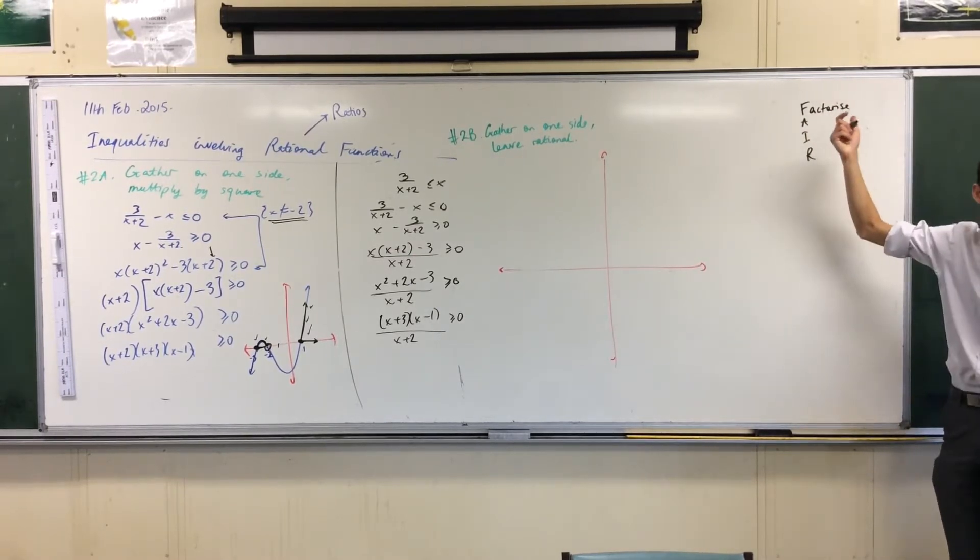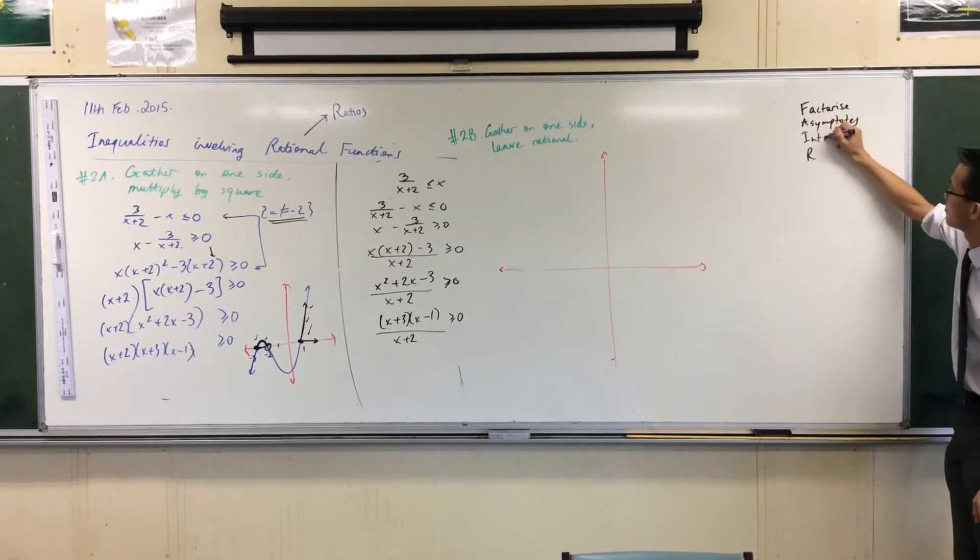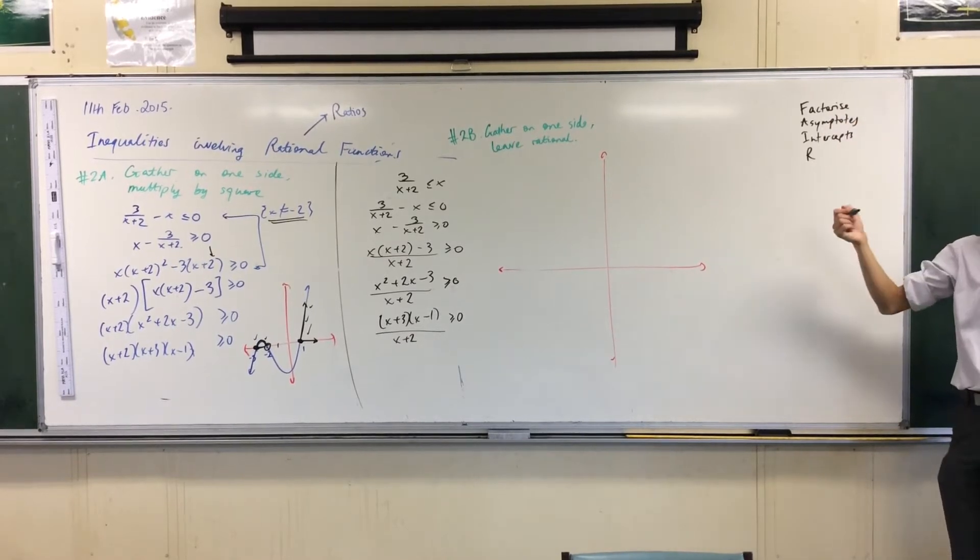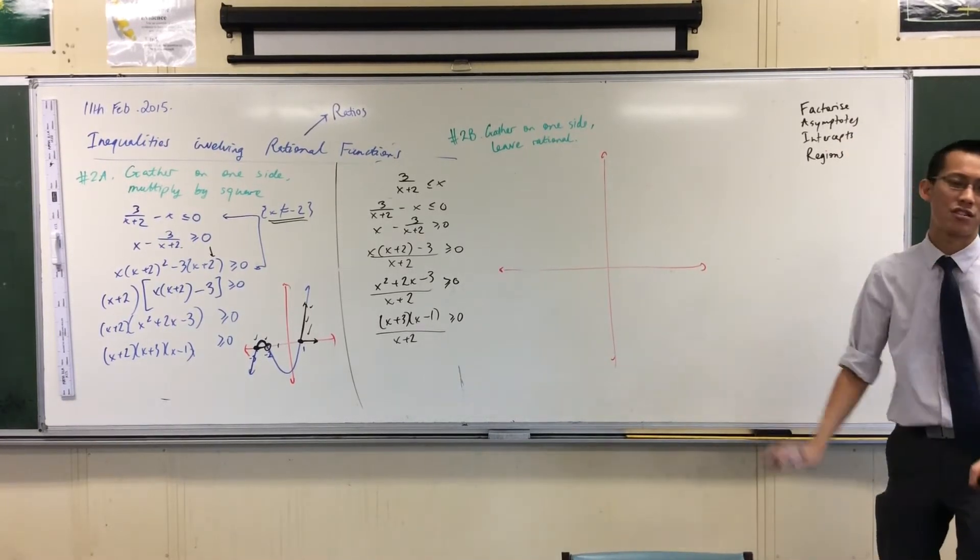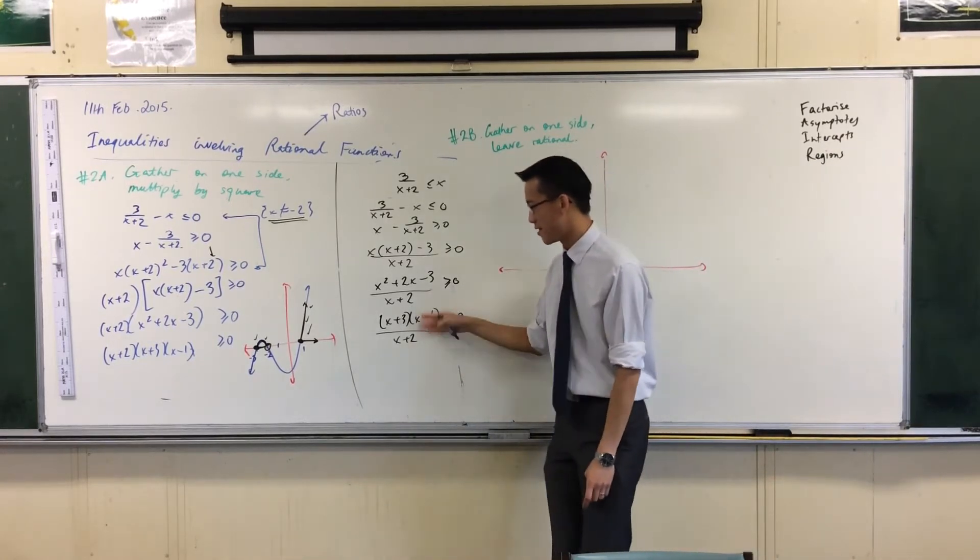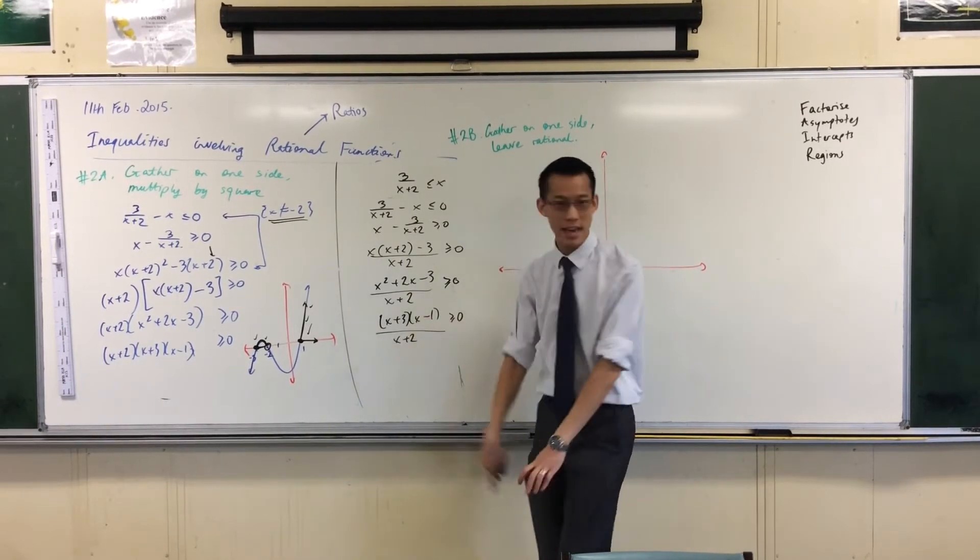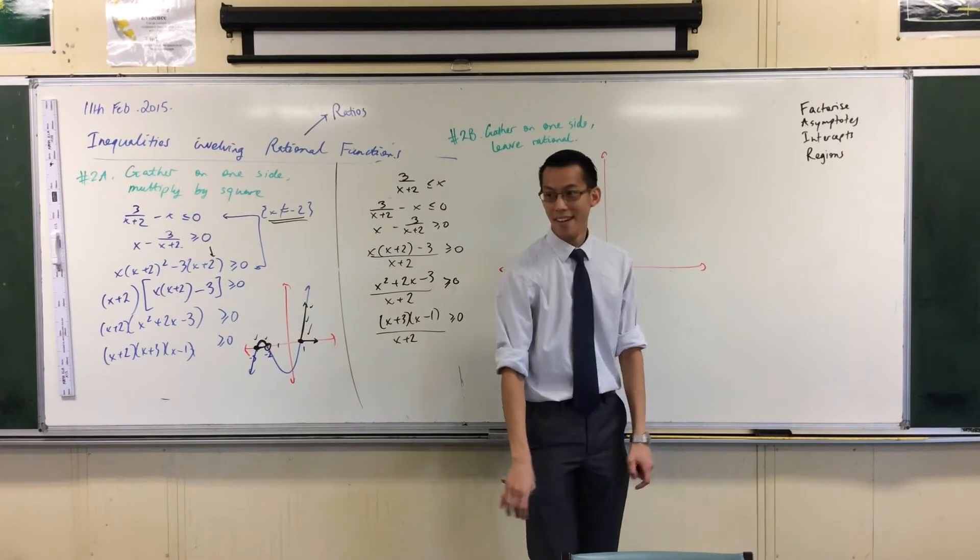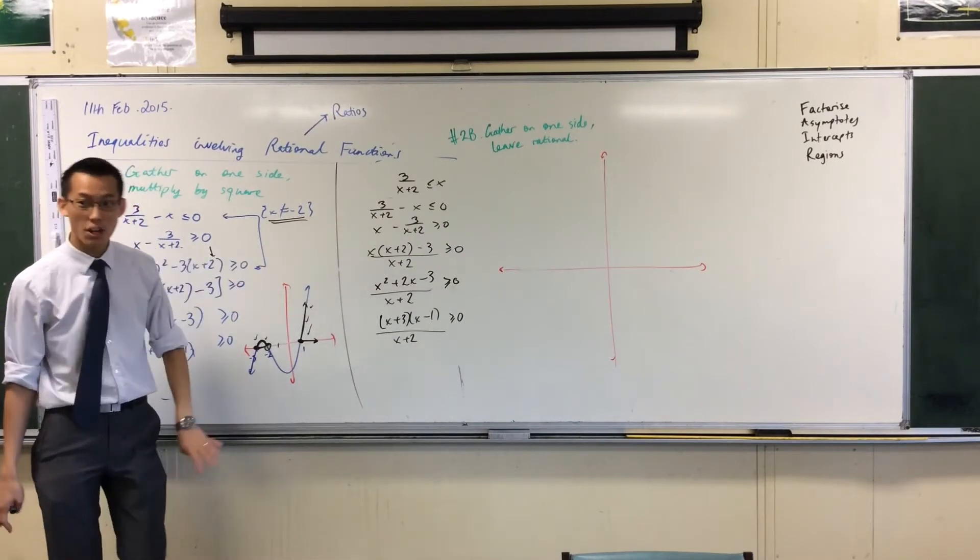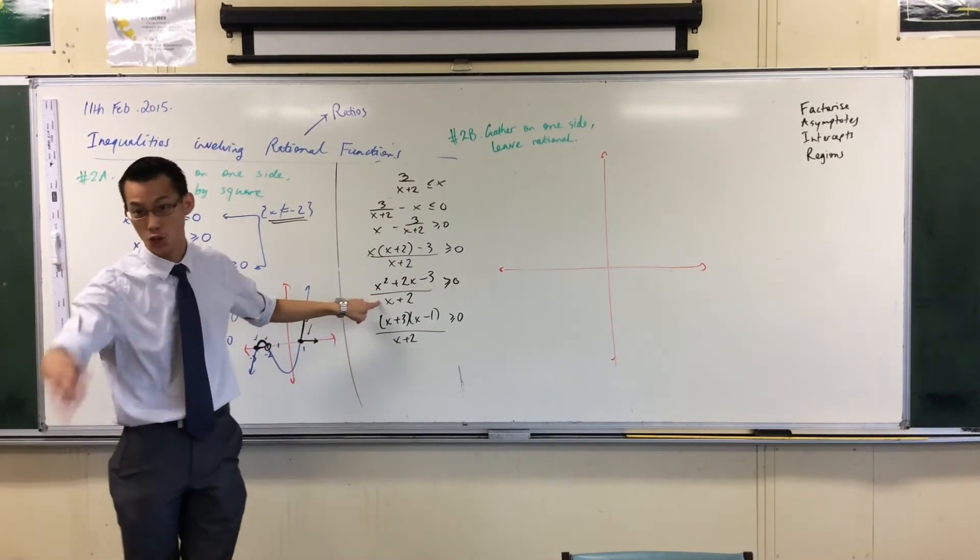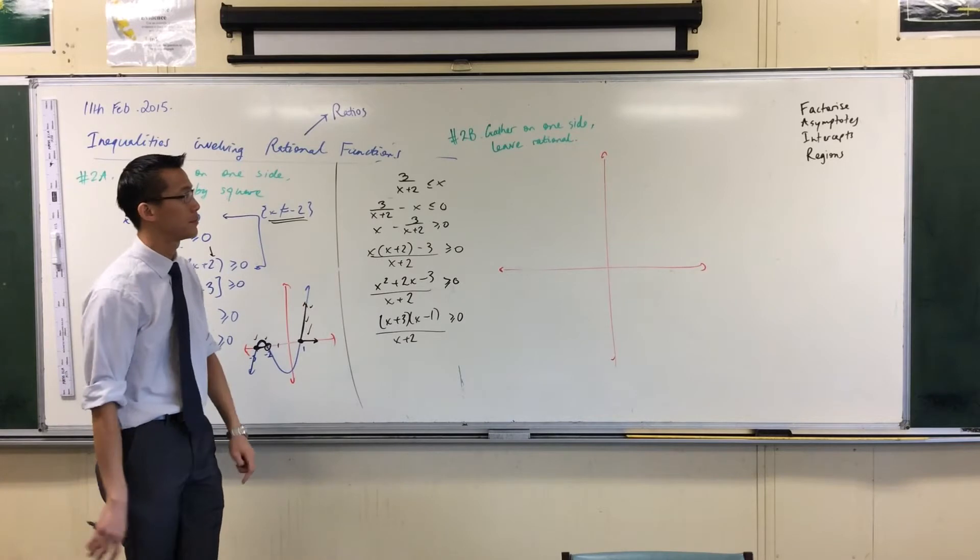So I'm going to use this as my approach. The letters stand for Factorize, find your Asymptotes, find your Intercepts, and then do some shading of Regions. Once you do all of those, you can graph very easily any rational function I throw at you. Even ones where this has got a linear denominator, which are the easiest type, but if you've got a quadratic there, a cubic there, any combination.